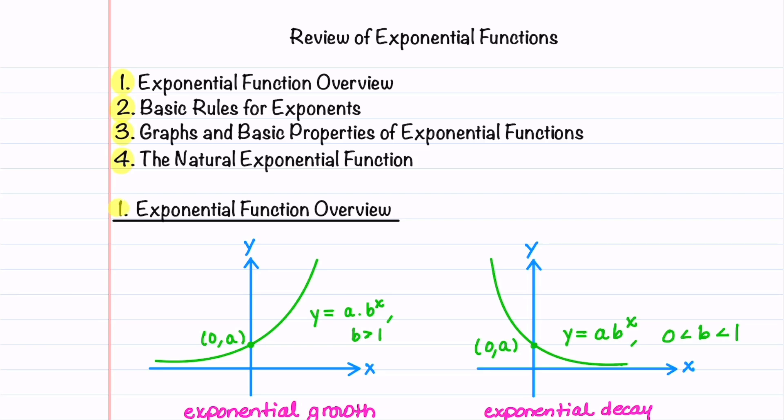Let's begin with an overview of the exponential function. There are two main types of exponential functions. The first is y equals a times b raised to the x power, where b is greater than 1. This function grows exponentially. The second is also y equals a times b raised to the x. However, for this one, our b is between 0 and 1. This function decays exponentially.